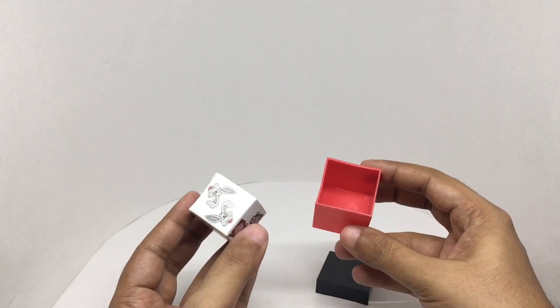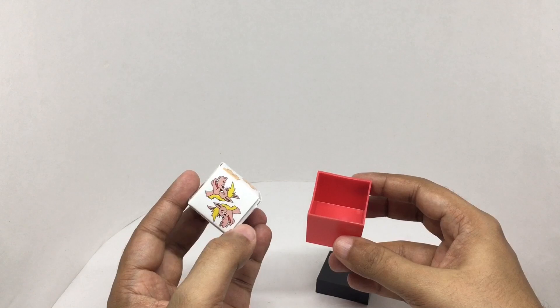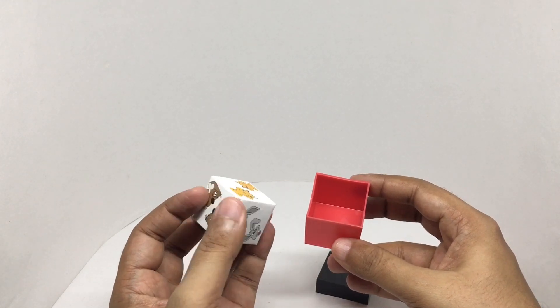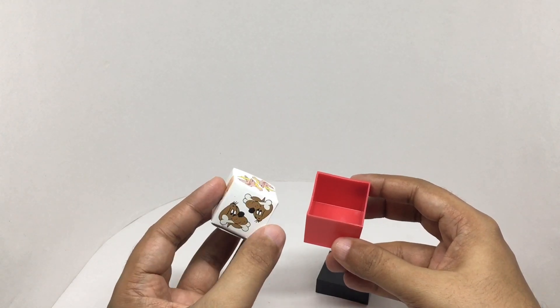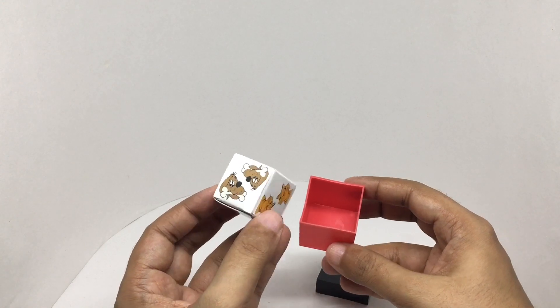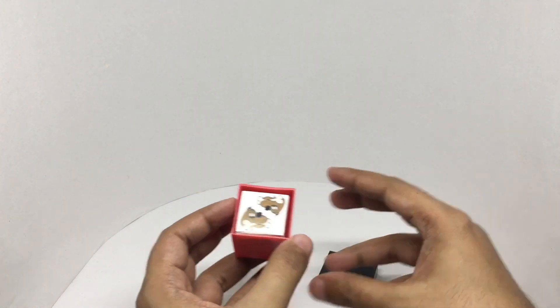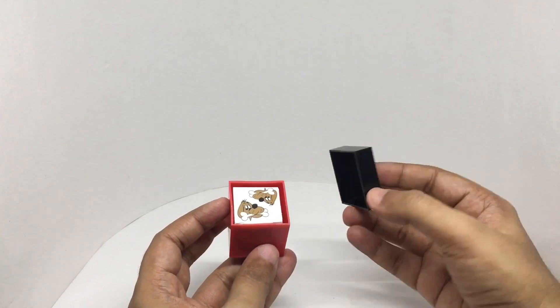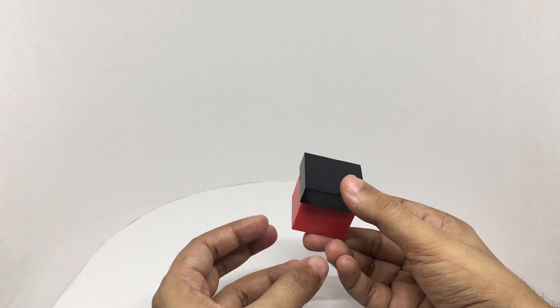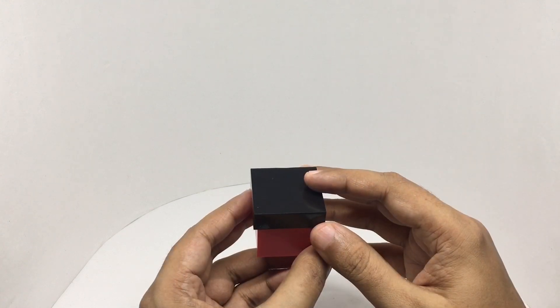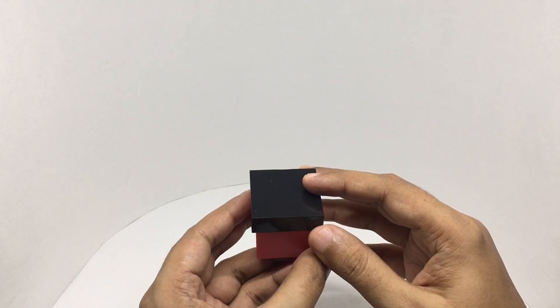This is the trick. Audience places the dice in the box with their favorite animal on top. Let's go with the dog. So he covers it and gives it to the magician with both his hands, puts it behind his back.